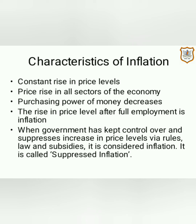The fifth characteristic is suppressed inflation. When the government keeps control over and suppresses increases in price levels via rules, laws, and subsidies, it is still considered inflation and is called suppressed inflation. The government tries to control the rise in price of goods and services by giving subsidies or by making a loss, but the prices are actually rising. Because the effect of the price rise is not passed on to the consumer due to government intervention, this is still considered inflation — and since it is being suppressed by the government, it is called suppressed inflation.